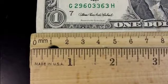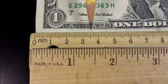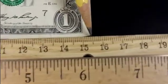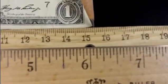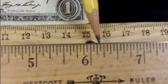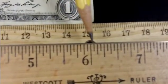So, this dollar bill is 15.5 inches, excuse me, centimeters, which is about six, one, two, three, six and three-eighths inches.